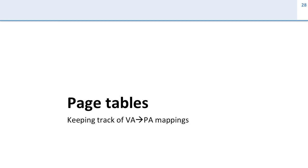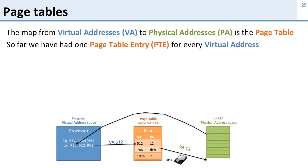Now we're going to talk about page tables. The page table is the mapping that keeps track of virtual address to physical address mappings, and we're going to see in a minute why we call it a page table. We saw before that we have this map from virtual addresses to physical addresses — we're going to call this the page table. What we've seen so far is we had one entry, or one page table entry, for every virtual address.